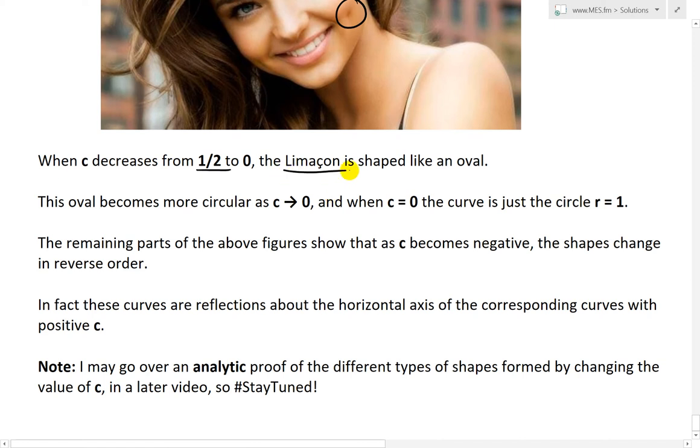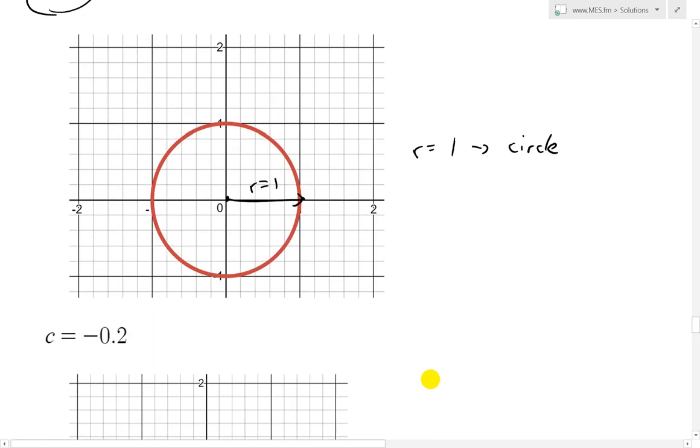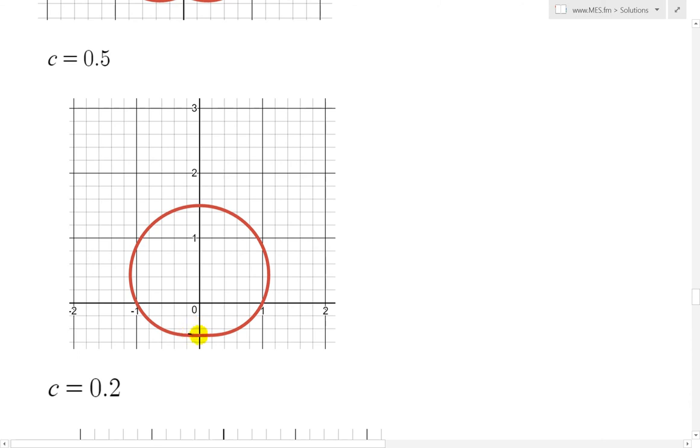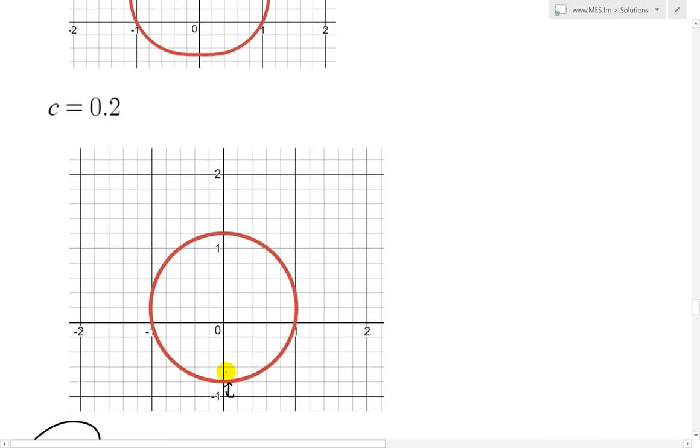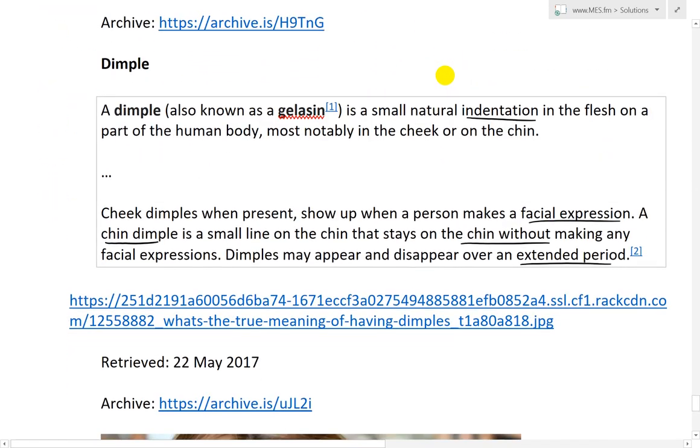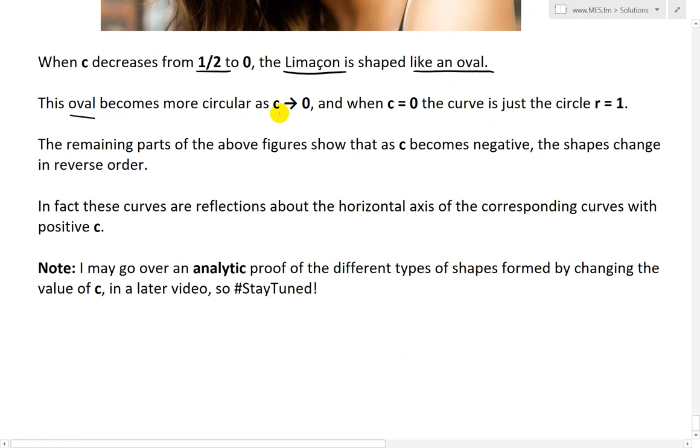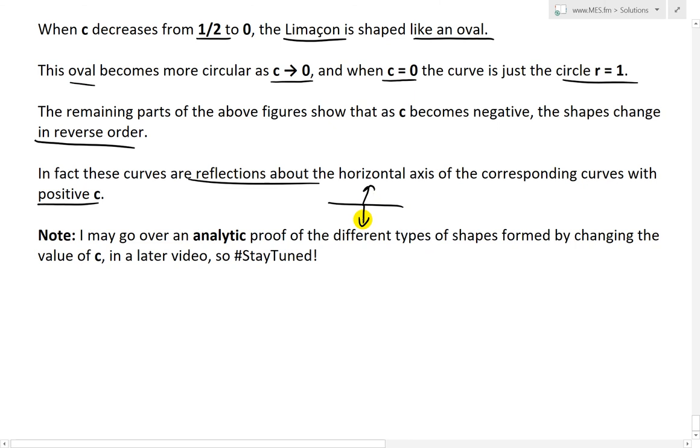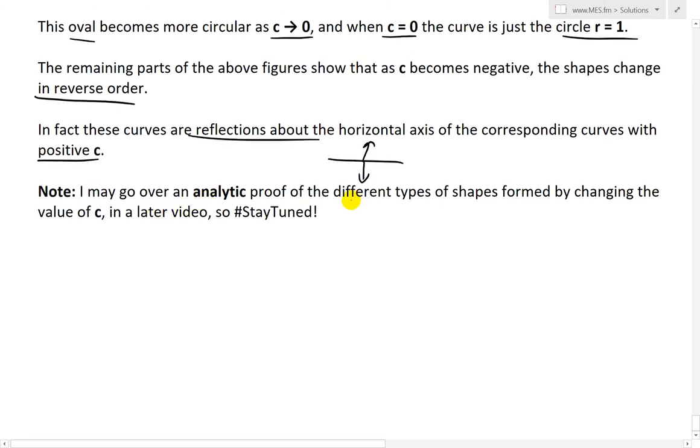Anyways getting off topic let's go back into the math. So when c decreases from 1 half to 0 the limaçon is shaped like an oval and you can even see that over here. So yeah this one's like an oval shape because this isn't perfectly circular this one is almost perfectly circular so in between it is like an oval shape it's not perfectly circular. So let's go back and basically this oval becomes more and more circular as c approaches 0. And when c goes 0 the curve is just a circle r equals 1. The remaining parts of the above figures that show shows that as c becomes negative yeah the shapes change in reverse order so just a mirror reflection across.